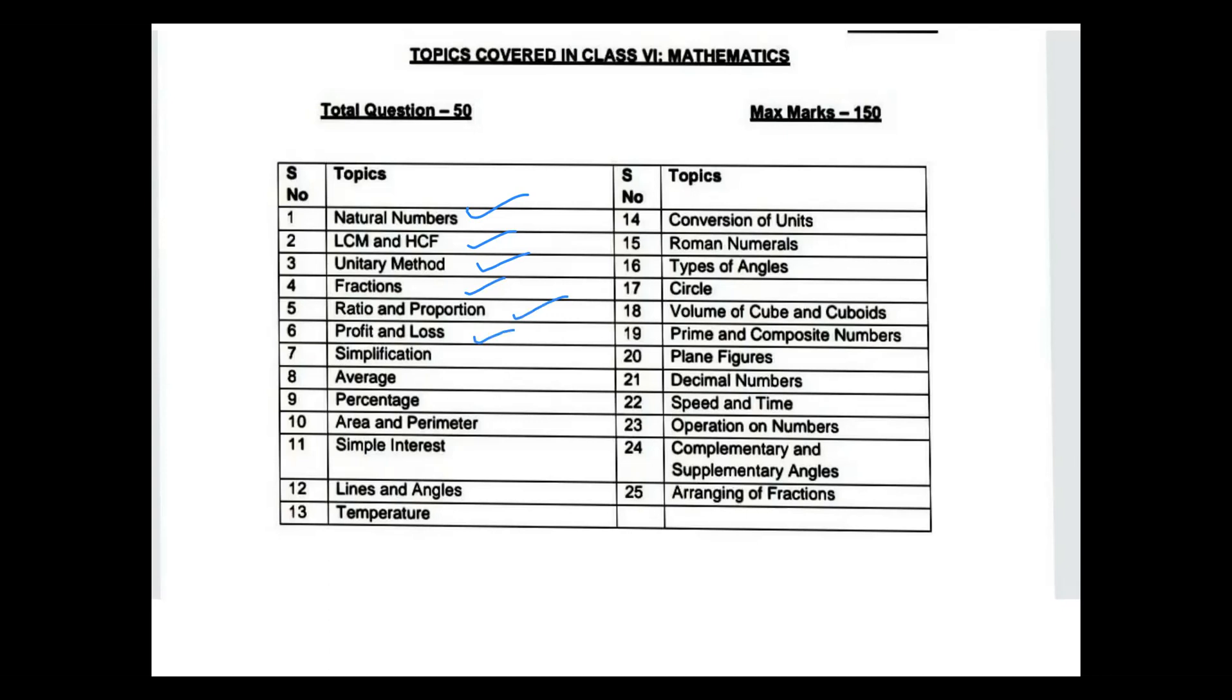You need to remember for profit and loss: What is profit? What is loss? And profit percentages, loss percentages. Simplification is nothing but BODMAS, and you have to use the BODMAS rule. Average and percentages - changing into percentages and percentages convert into normal fractions, these are all very important. If you want percentages, you have to multiply by 100. To remove the percentage symbol, divide by 100.